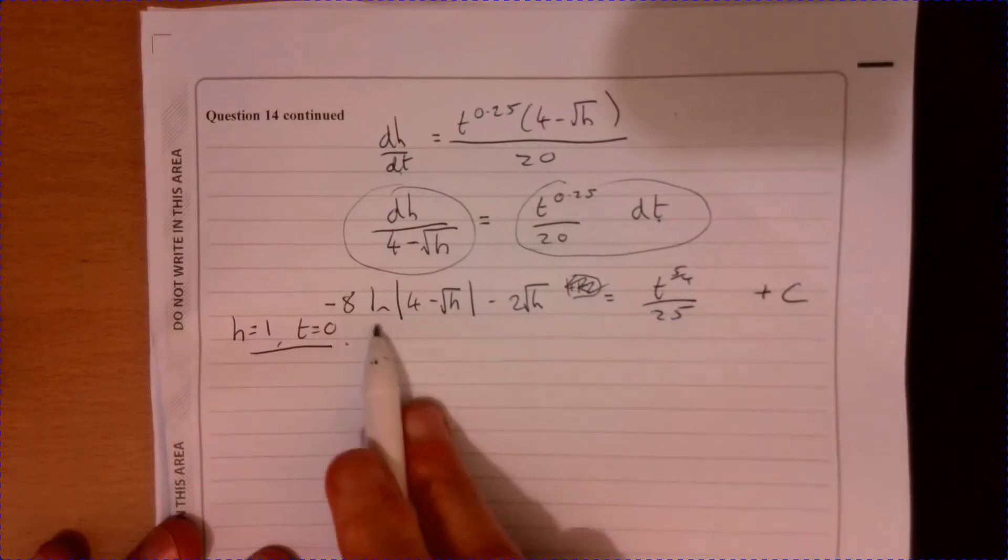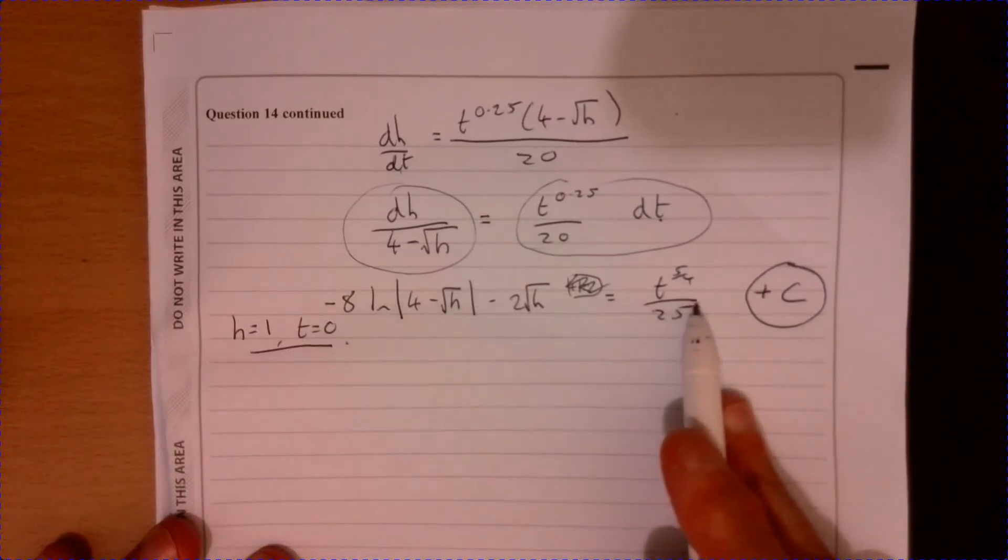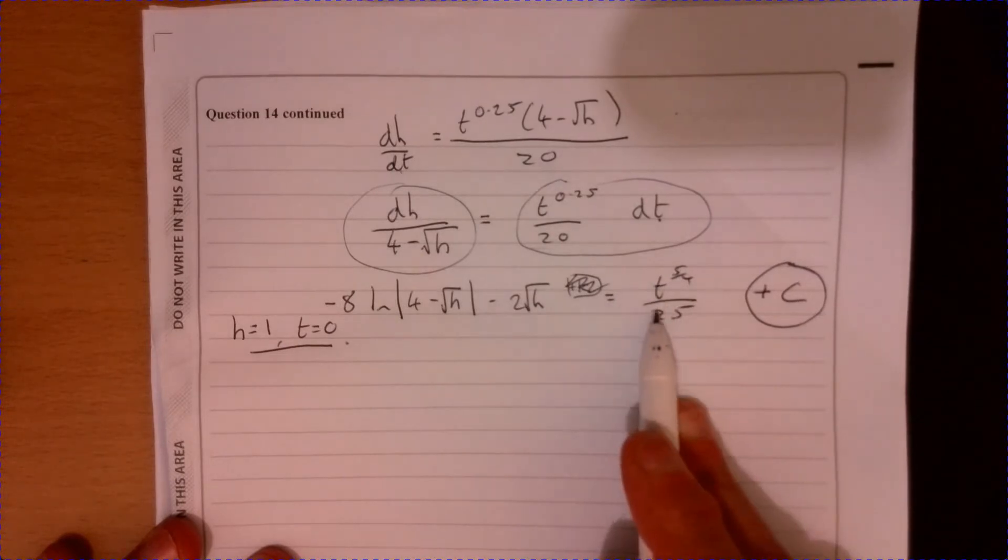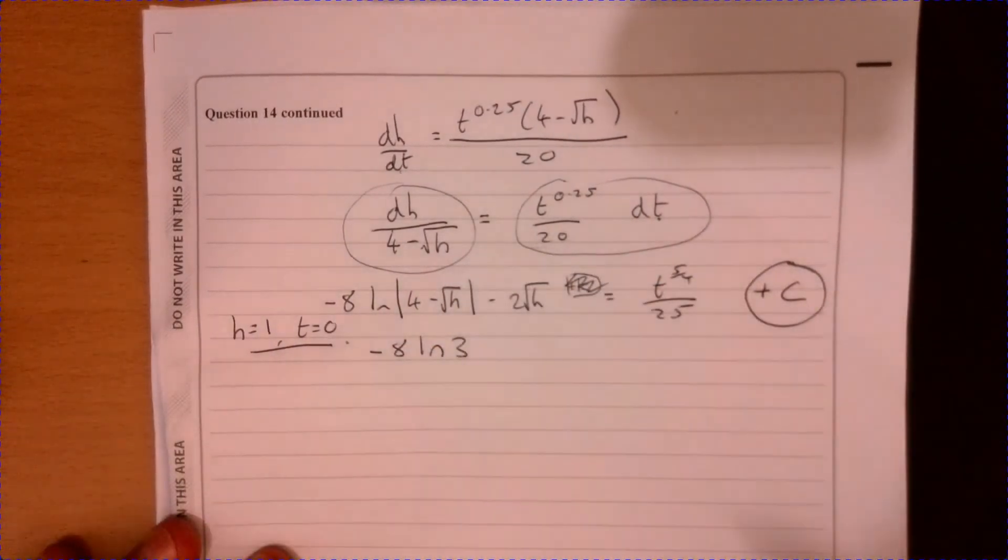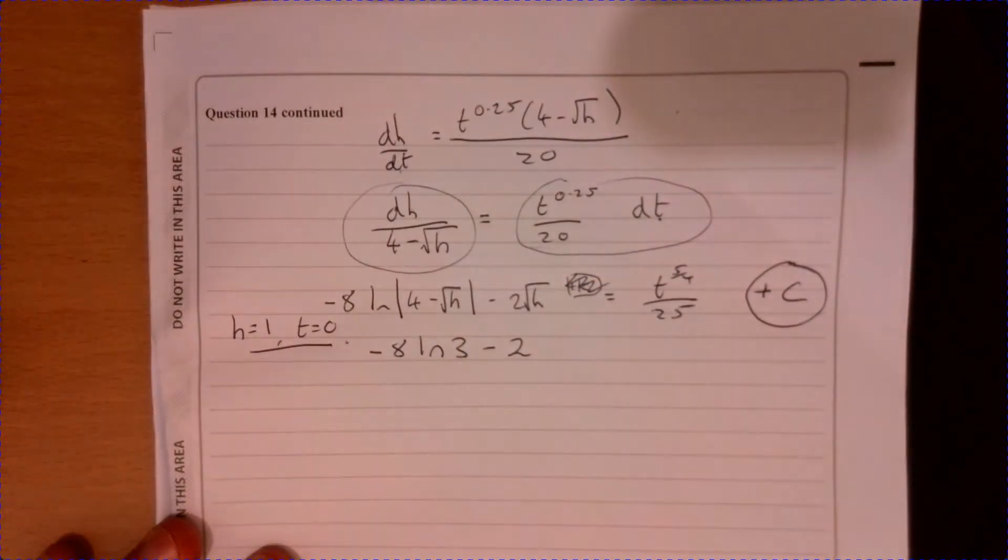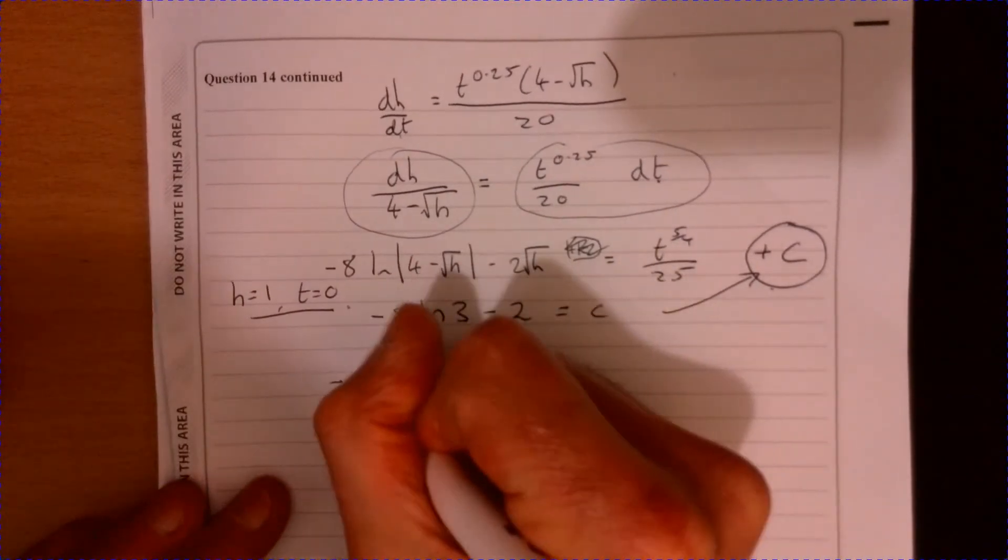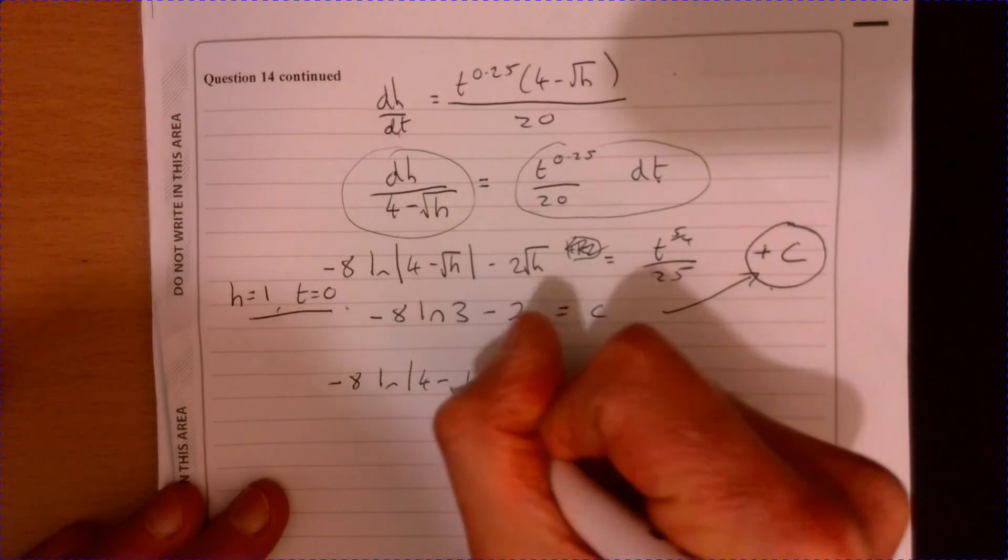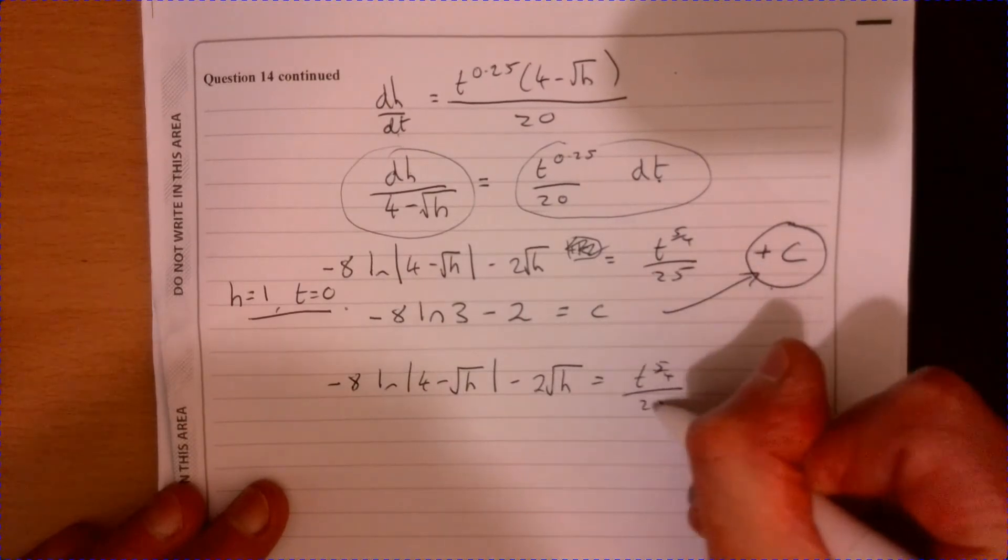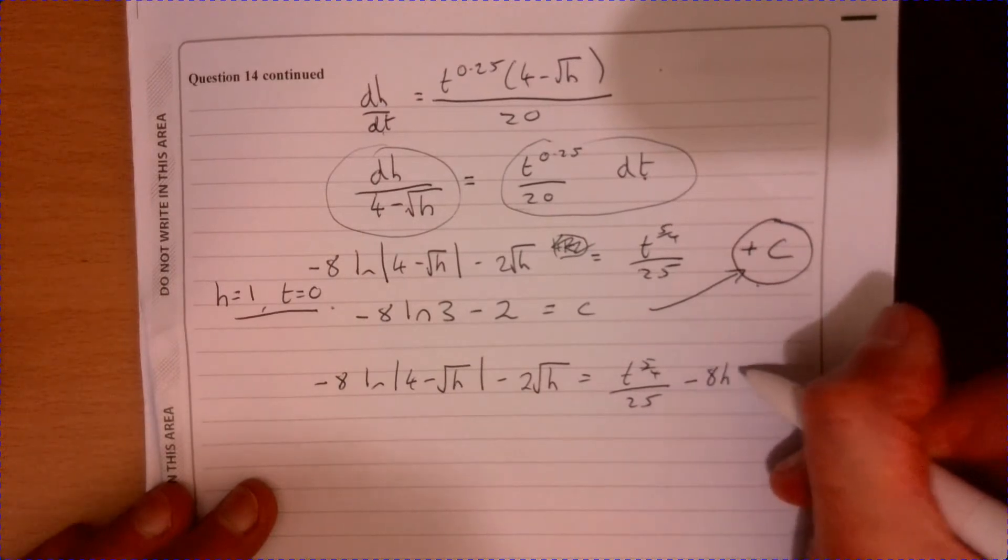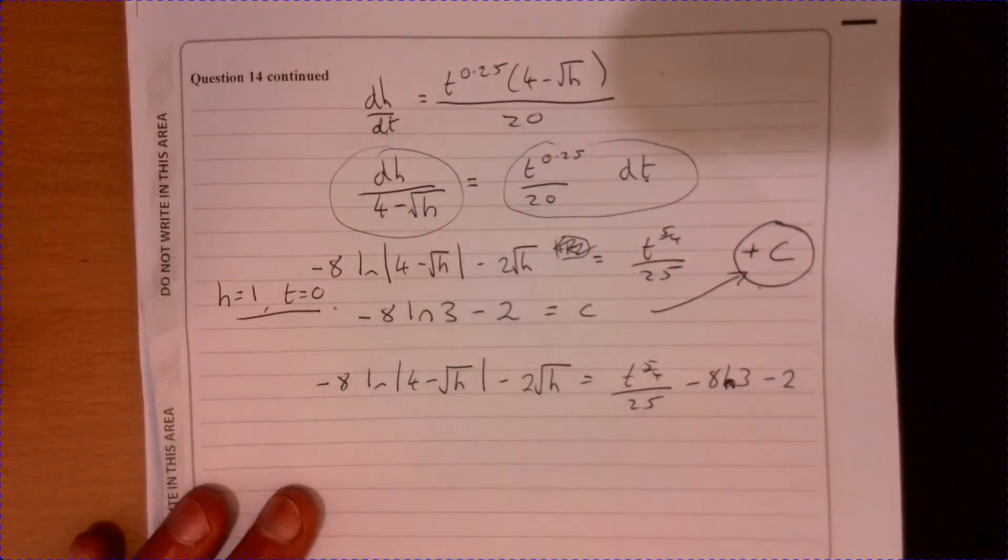What was that information that we knew before? We knew that when h equals 1, that was at time 0. So this will allow us to work out what this is. If we just sub in 1 and 0, that's going to give us 0 just here. What's the rest of it going to be? We're going to have minus 8 ln 3 minus 2. And that's going to equal that constant value. So if we just now just piece it all together. I know it looks horrible. Well, they are tricky, these. But the more that you work with these, then the easier it's going to be to do.